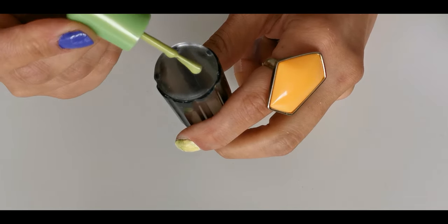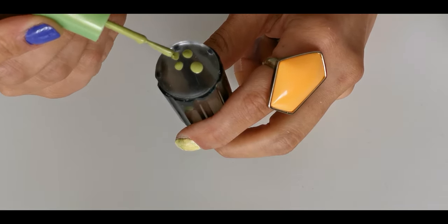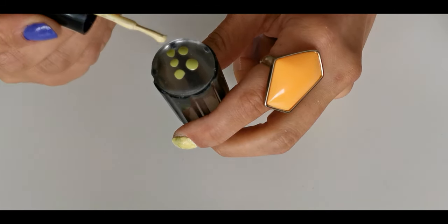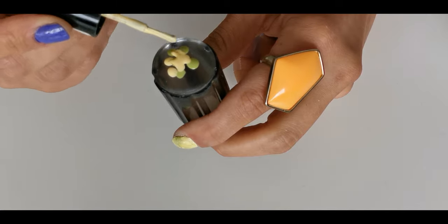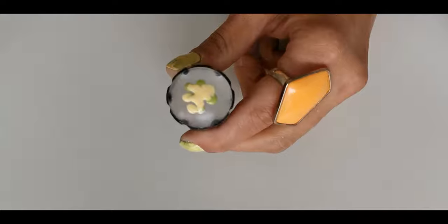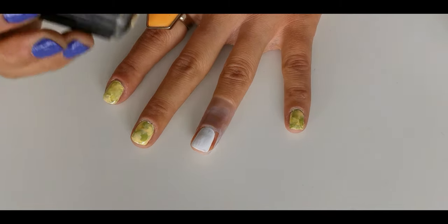Take a yellow and green nail polish and unevenly apply it on a stamper. Gently transfer it to your nails.